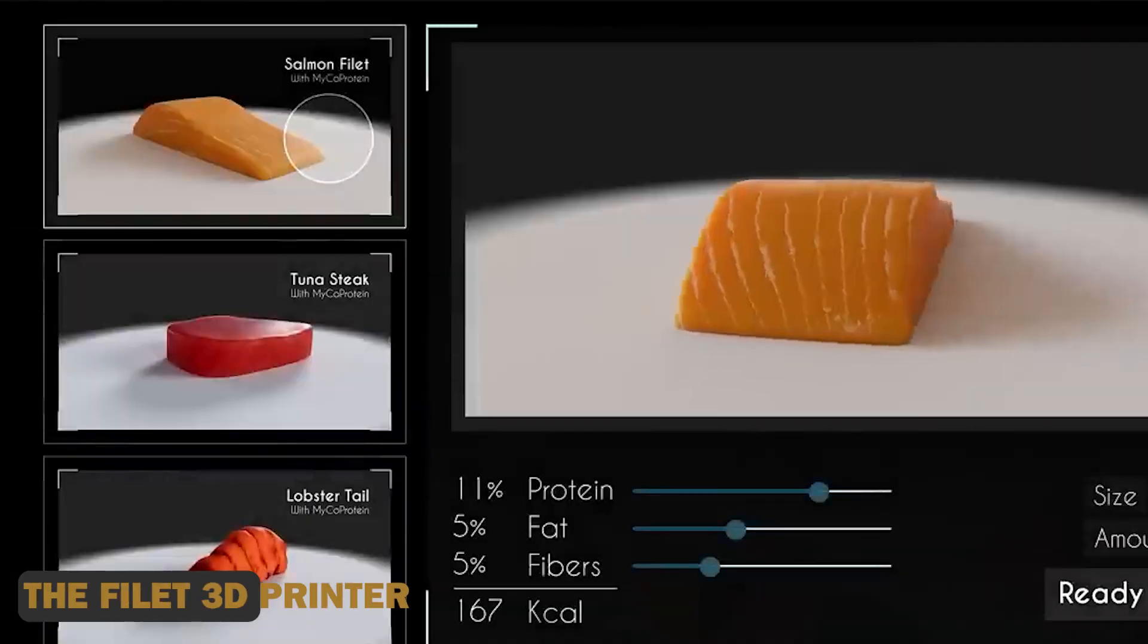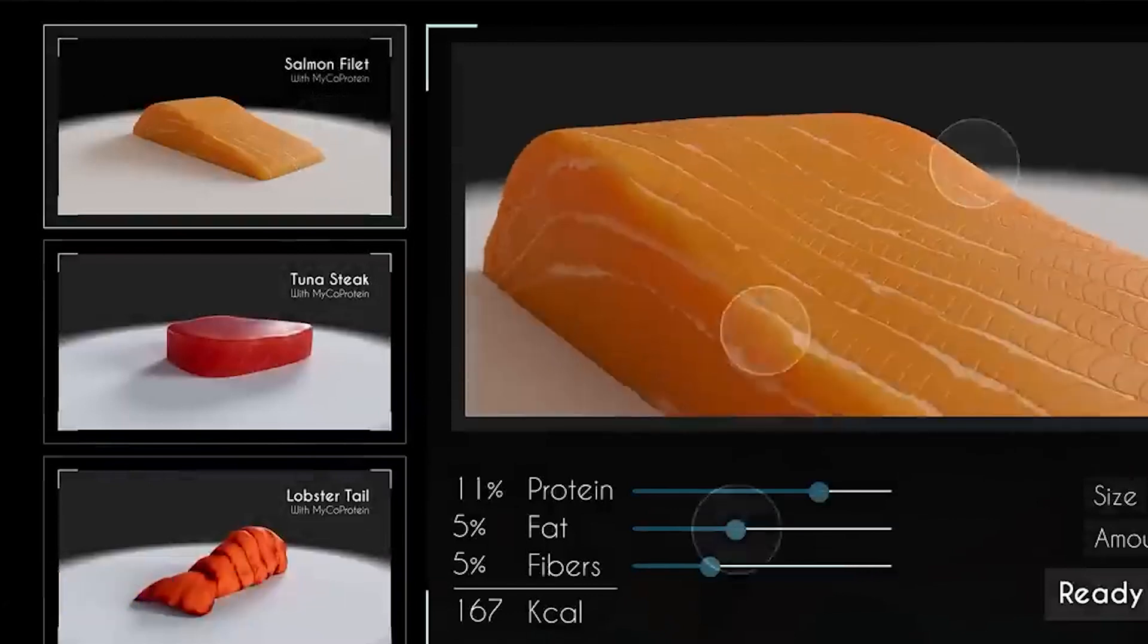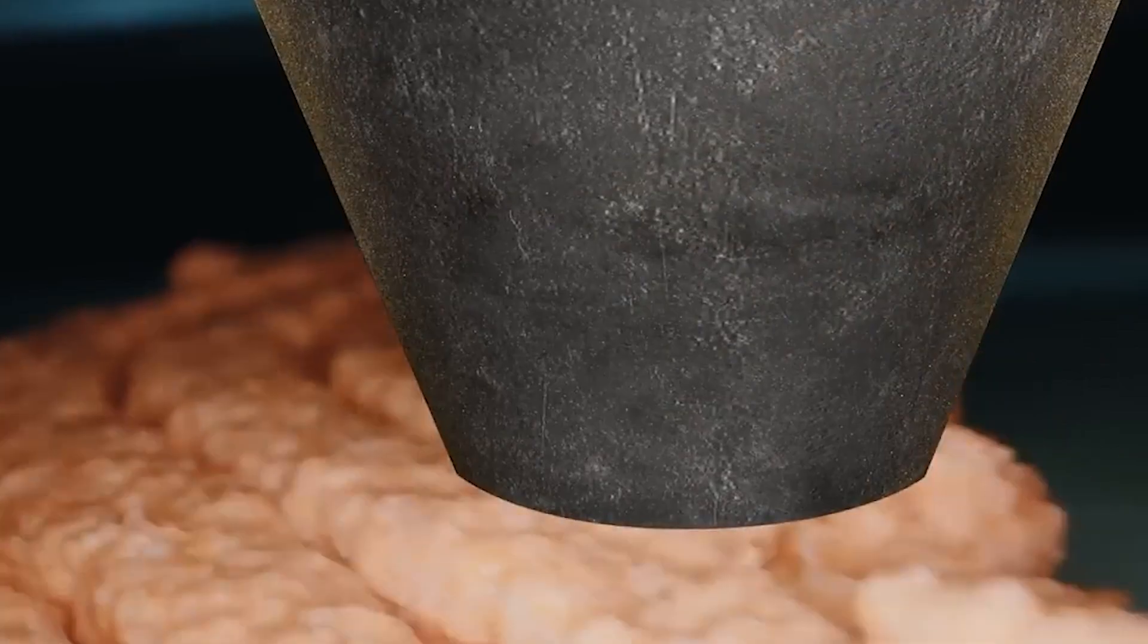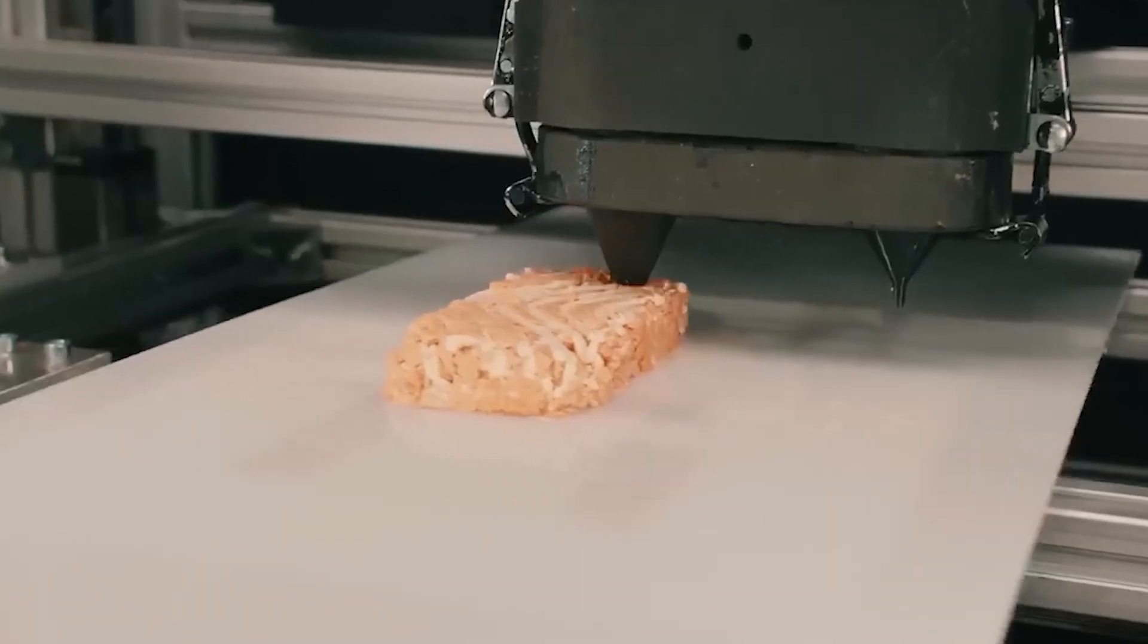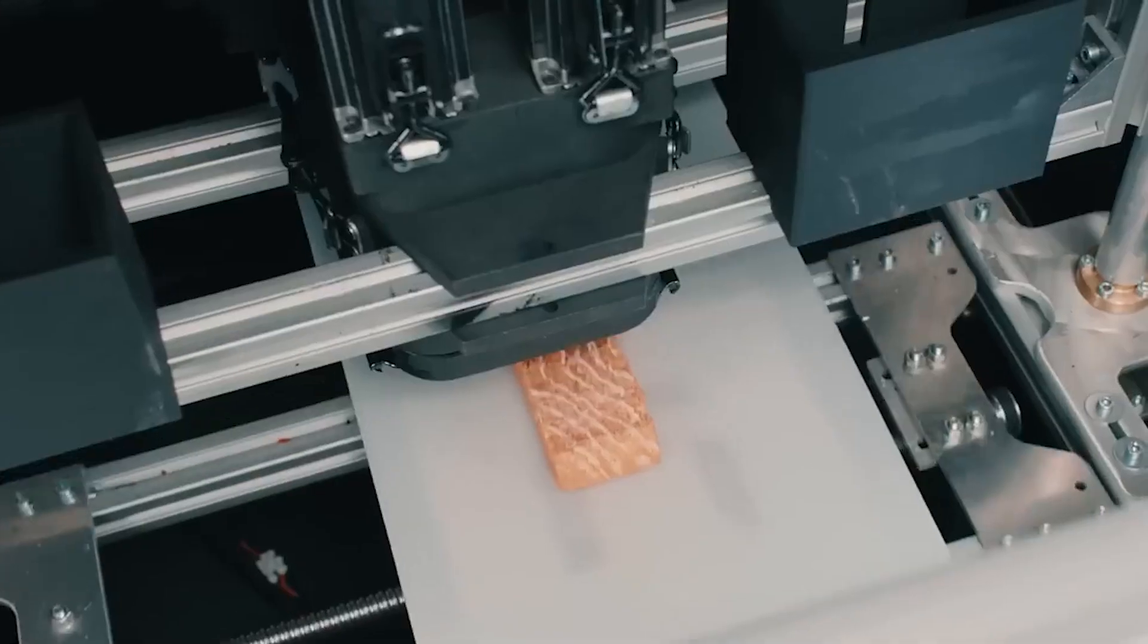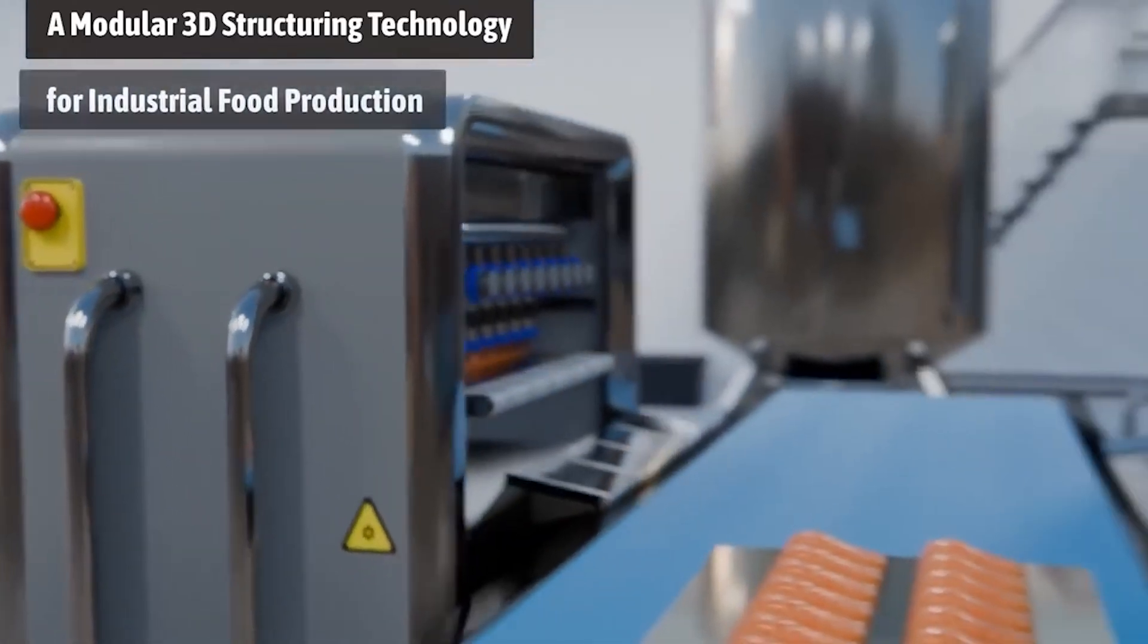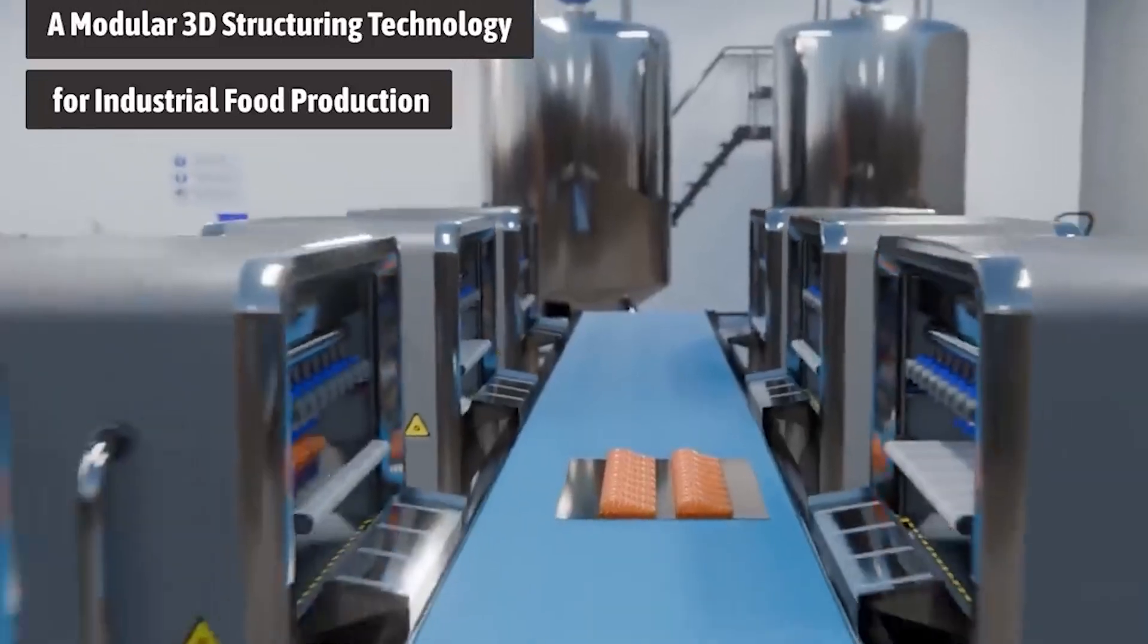Number 1: The Filet 3D Food Printing. This innovative product is crafted from microprotein, a fungus-based protein that beautifully mimics the texture and flavor of salmon. Leveraging cutting-edge 3D printing technology, Revo Foods shapes the microprotein into a salmon-like filet, which is then cooked and flavored to perfection.